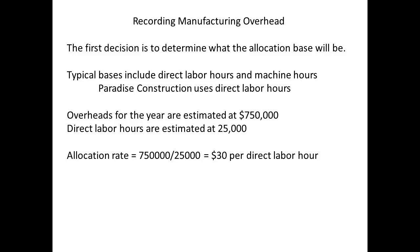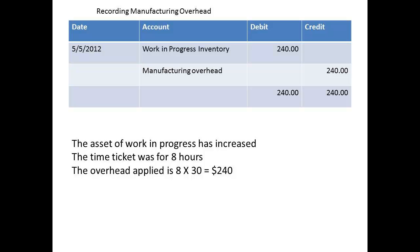Paradise Construction has arrived at the figure of $30 per hour, because the estimated overheads for the year are $750,000, and the estimated direct labour hours are 25,000. Dividing overhead by hours, we get the figure of $30. The journal entry for the accounts will reflect this overhead for the work done so far. Eight hours of overhead costs are to be applied at $30 per hour, a total of $240. The asset account of work in progress is being increased, and the manufacturing overhead account is decreased.